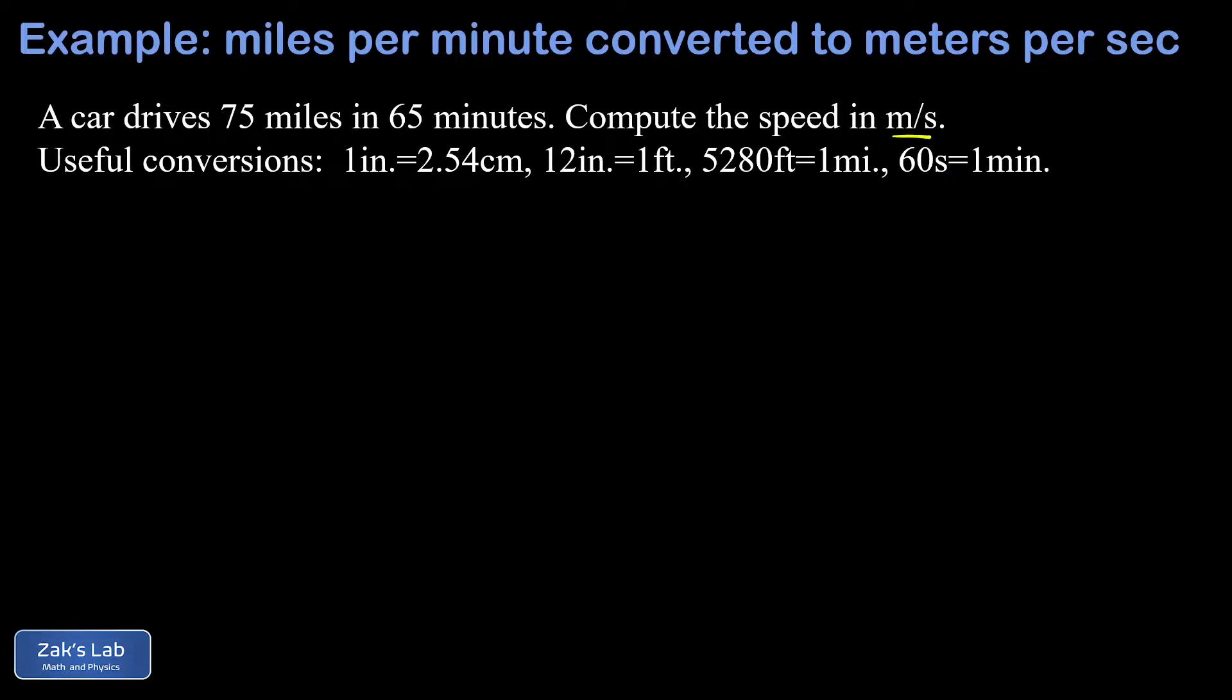We're given a list of conversions that we can use: 1 inch equals 2.54 centimeters, 12 inches in a foot, 5280 feet in a mile, and 60 seconds in one minute. We start by expressing the speed in the original units.